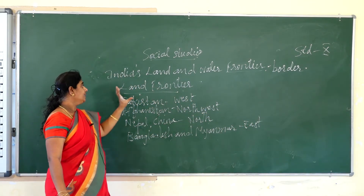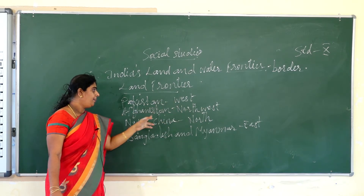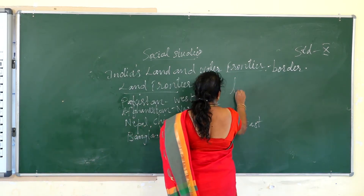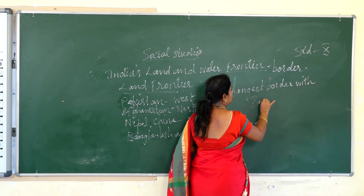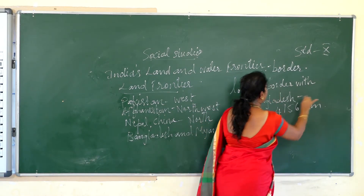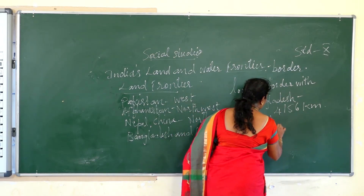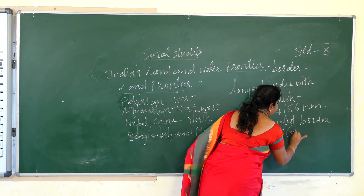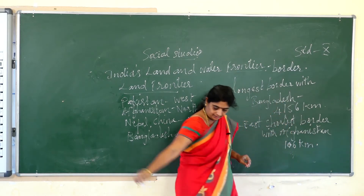So India's land frontiers are: Pakistan in the west, Afghanistan in the northwest, Nepal and China in the north, and Bangladesh and Myanmar in the east. India shares its longest border with Bangladesh — that is 4156 kilometers. The shortest border is with Afghanistan, which is 106 kilometers.